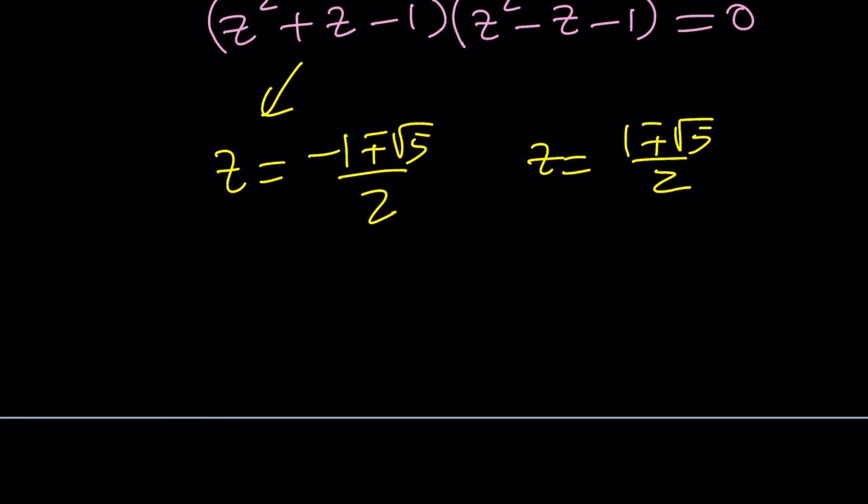1 plus root 5 over 2 and 1 minus root 5 over 2 - but at the end you get the exact same set of solutions. Let's go ahead and take a look at the third method, and then what we found is going to match up hopefully with what Wolfram Alpha gives us.